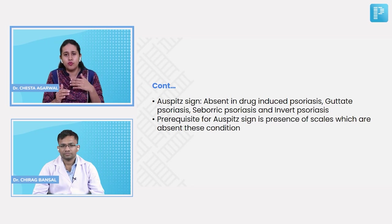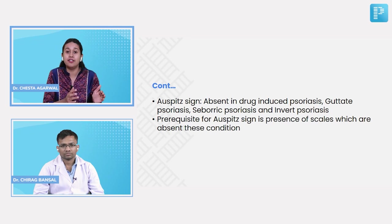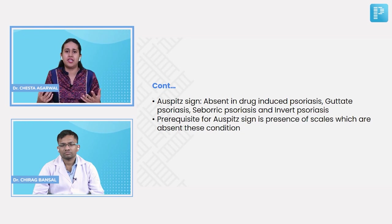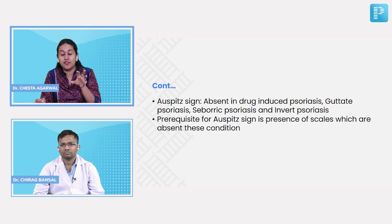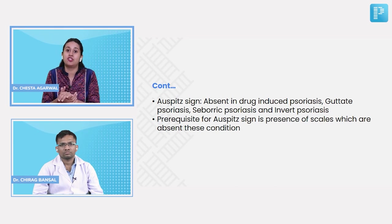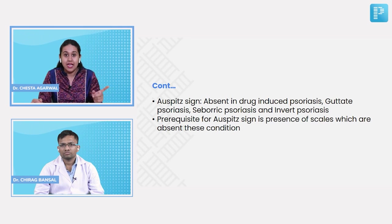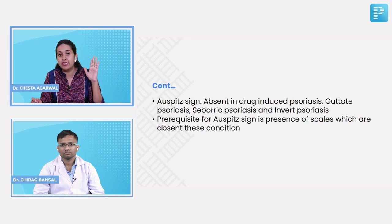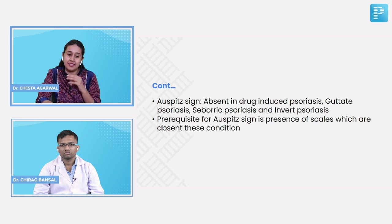Inverse psoriasis is a variant occurring only over flexors like axilla and groin, in contrast to typical psoriasis which occurs over extensors like elbow, knee, scalp, palm, and sole. In inverse or flexural psoriasis, because of moisture, there will be no scale, making the grattage and Auspitz signs negative.